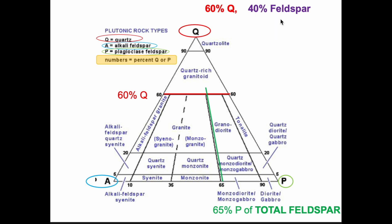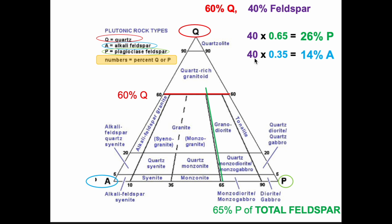So let's figure this out. If 40% of the remaining minerals are feldspar, then 40 times 0.65 equals 26% plagioclase. We can then also go: if 65% of the total feldspar is plagioclase, that means 35% of the total feldspar is going to be alkali. So 40 times 0.35 equals 14% alkali feldspar. And if you add these numbers up — 60% quartz, 26% plagioclase, 14% alkali — you get 100%. So that point right there would be these numbers here.